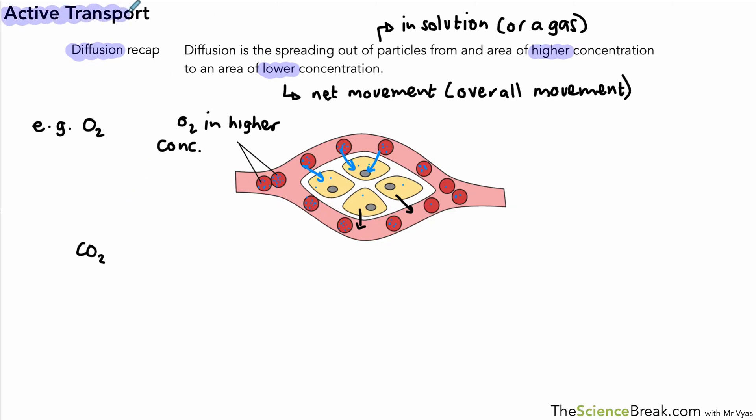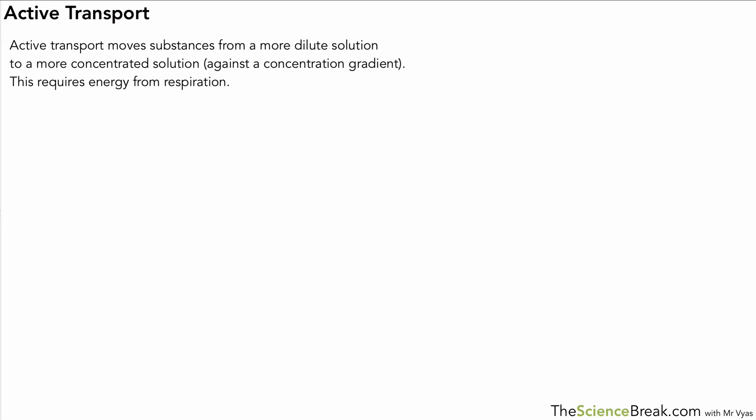What we're going to look at today is something slightly different, still transport, but it's called active transport. So what do we mean by active transport? Well the first thing to probably look at is the definition or the meaning. So here we've got it written down: it's the movement of substances from a more dilute solution to a more concentrated solution.